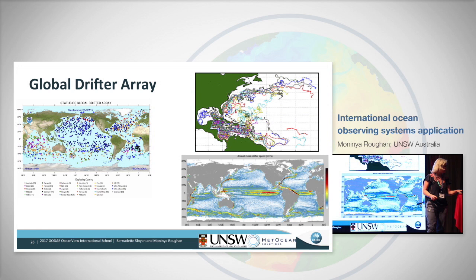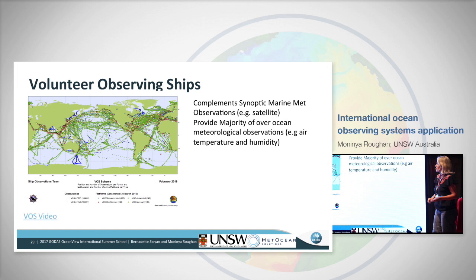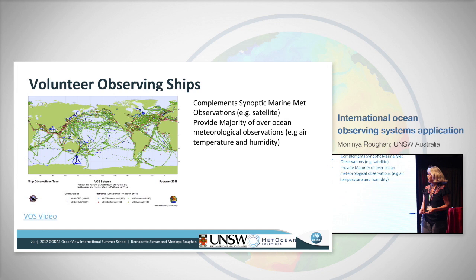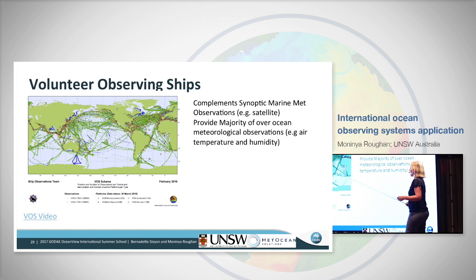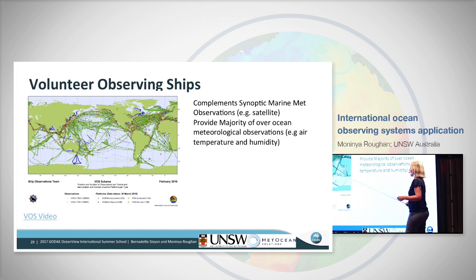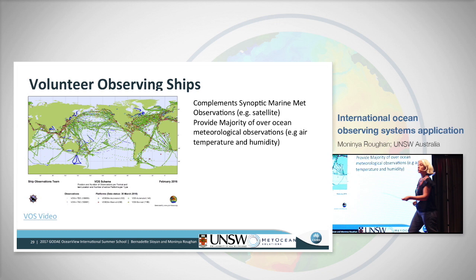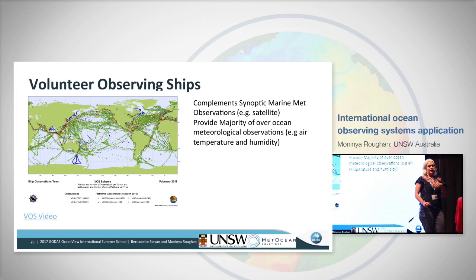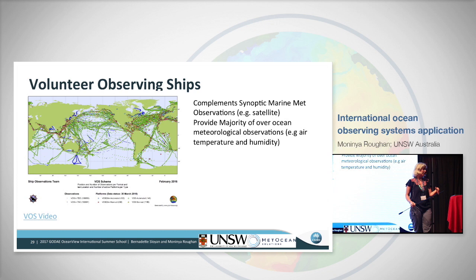Then there's the Volunteer Observing Ships program. These are not research vessels — they're commercial vessels that volunteer to collect oceanographic observations, possibly because it's important for safety at sea, or maybe because they're bored on long transects. There's a great video about the people who rely on these observations for safety at sea — they need to know atmospheric conditions and relay information to ships coming behind them.